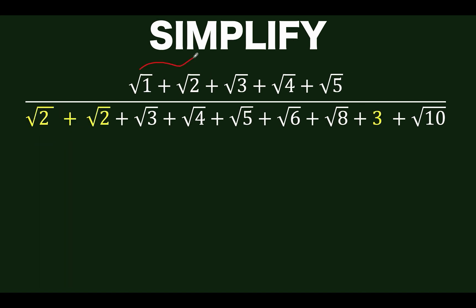Notice that in our numerator we started with square root of 1, square root of 2, square root of 3 up to square root of 5. And we now have here square root of 2, square root of 3 up to square root of 5. We need to make this square root of 1 so that this part here can look like the numerator.